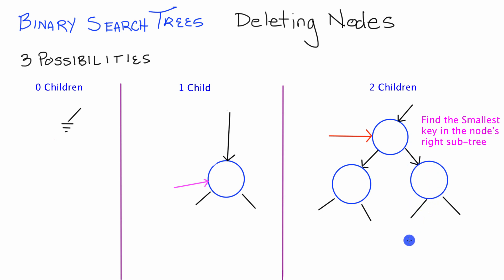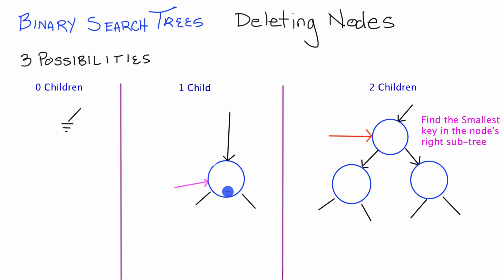Once we take the information from the node containing the right subtree's smallest key and place it in the target node, we can go ahead and delete that node with the smallest key. That node will always fall under the condition of having either zero children or one child, because if it has the smallest key value, it can still have nodes with greater keys on its right pointer, but it can't have any values on its left pointer. So we delete it using the same methods for zero or one child.